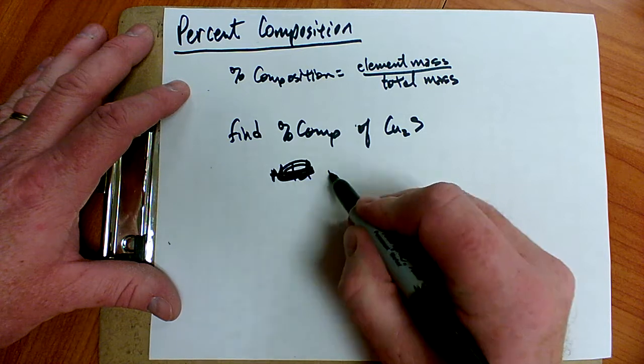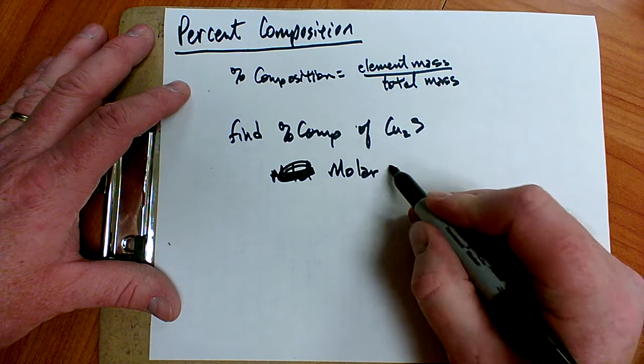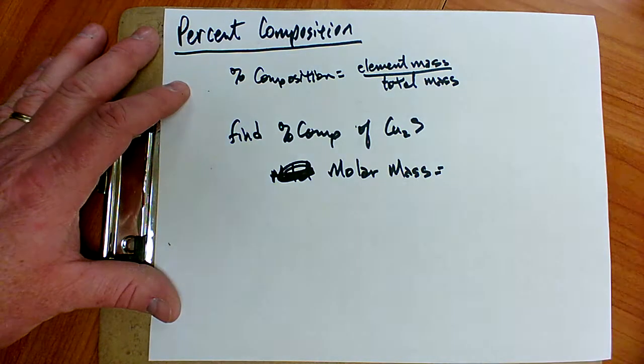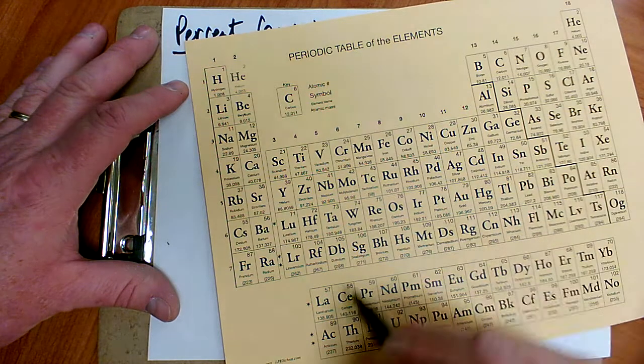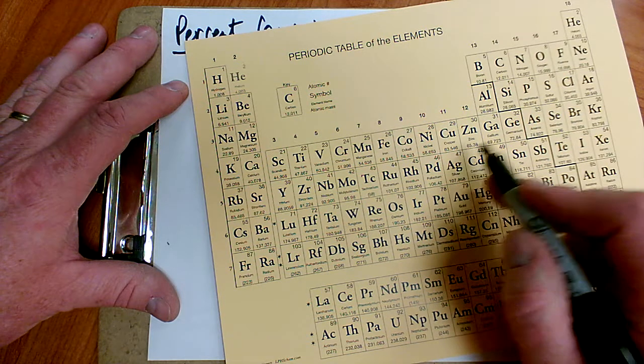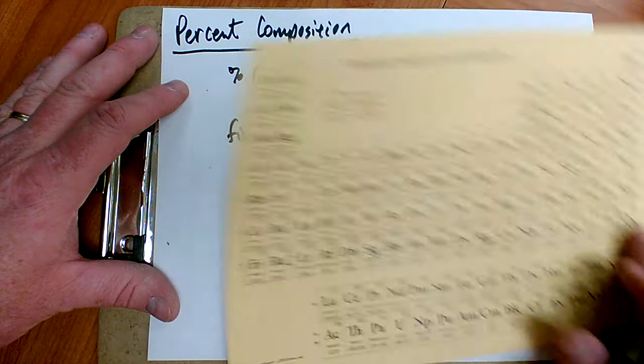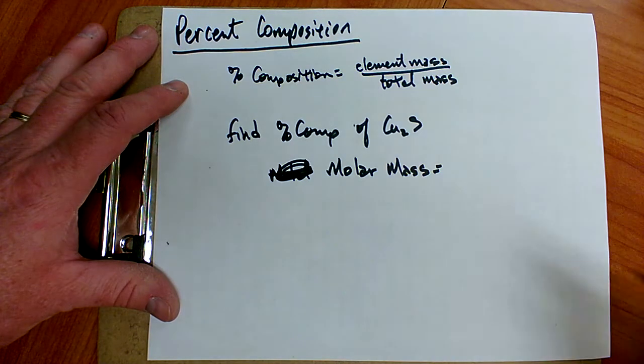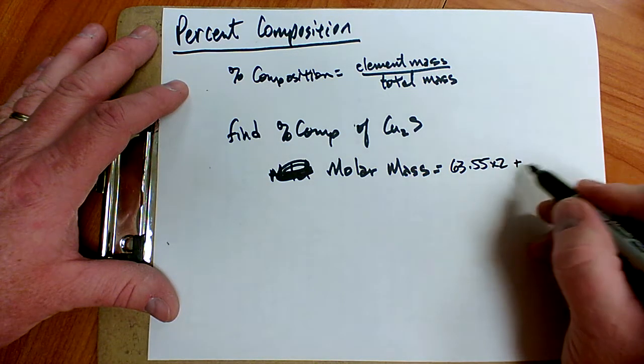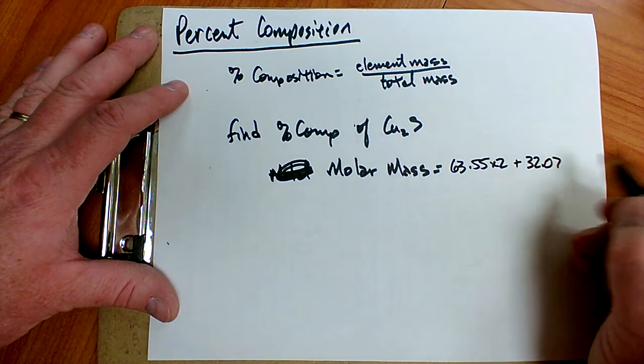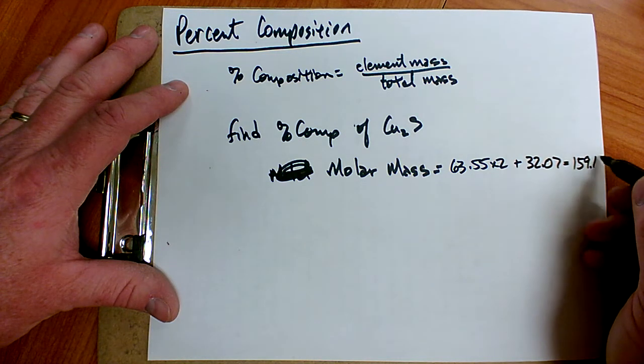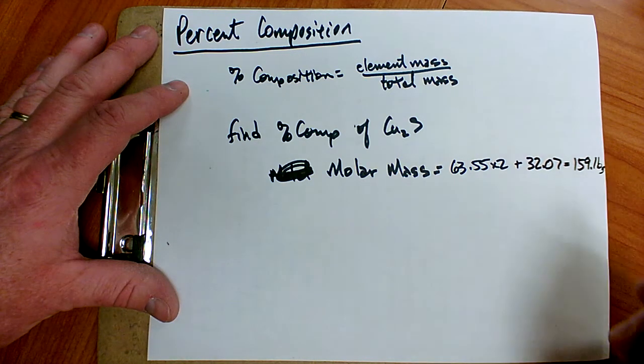The molar mass is going to be—I've got two coppers. So I pull out my periodic table and I find copper is 63.55 and sulfur is 32.07. So I've got 63.55 times 2, that's my copper, plus 32.07 is my sulfur. So I get a molar mass of 159.16 grams.